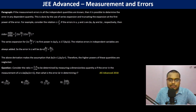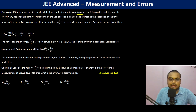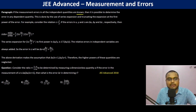If the measurement errors in all the independent quantities are known, then it is possible to determine the error in any dependent quantity. This is done by the use of the series expansion and truncating the expansion at the first order of the error.